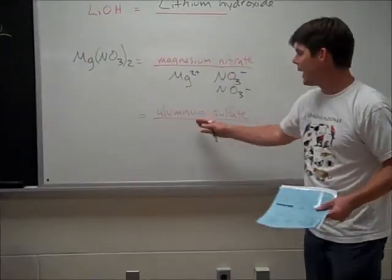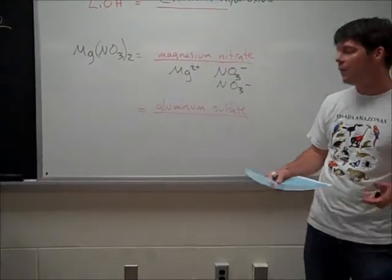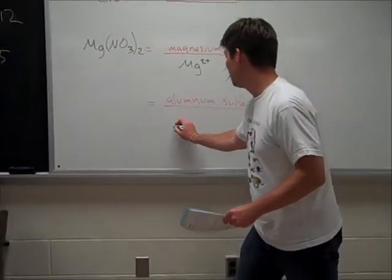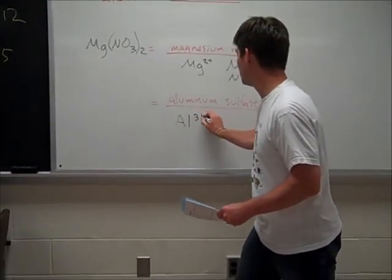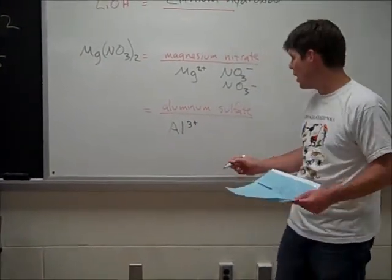Finally, our last example is aluminum sulfate. Now, again, we need to use the periodic table. We find that aluminum is in that group that has a plus three charge.